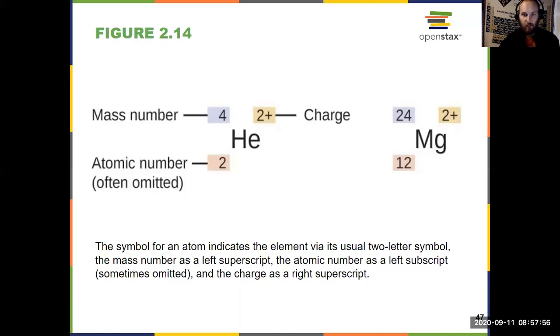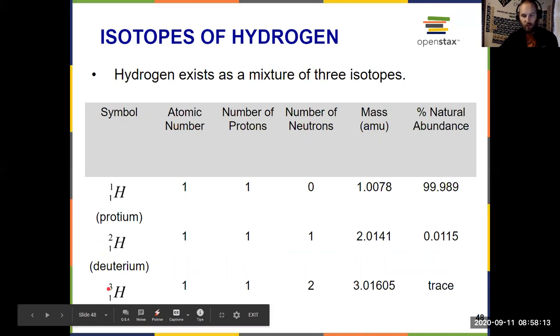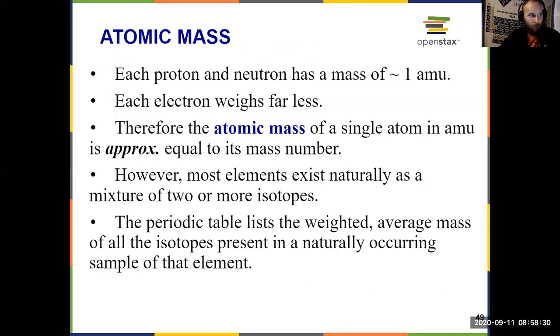And here we see some examples of isotopes of hydrogen. Each one has one proton, but they have different numbers of neutrons. Three different isotopes of hydrogen. And again, the mass that's represented on the periodic table, the 1.008 that you'll see, is the weighted average of all of these isotopes.